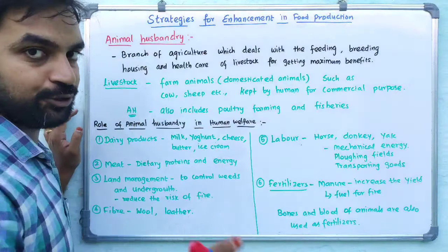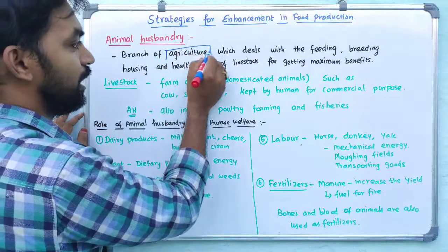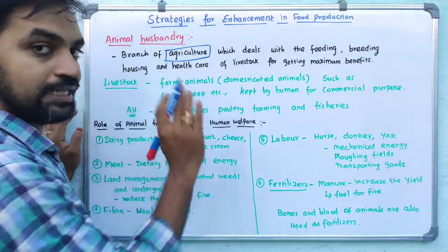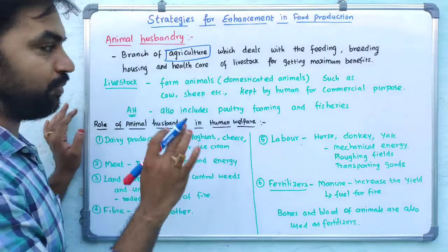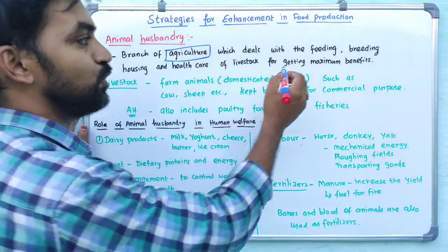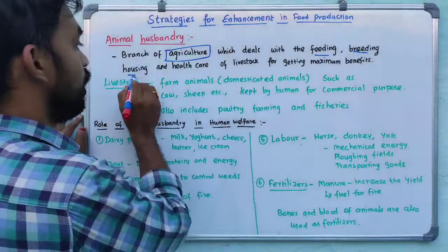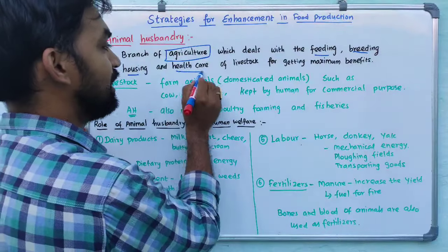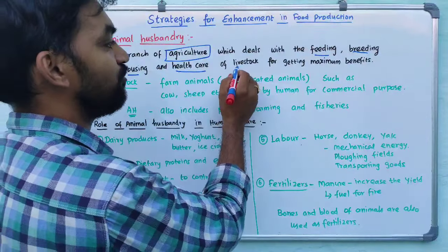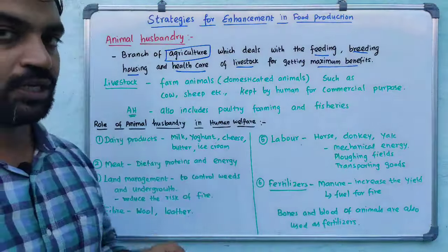Animal husbandry is a branch of agriculture. It deals with feeding, breeding, housing and health care of livestock for getting maximum benefit.